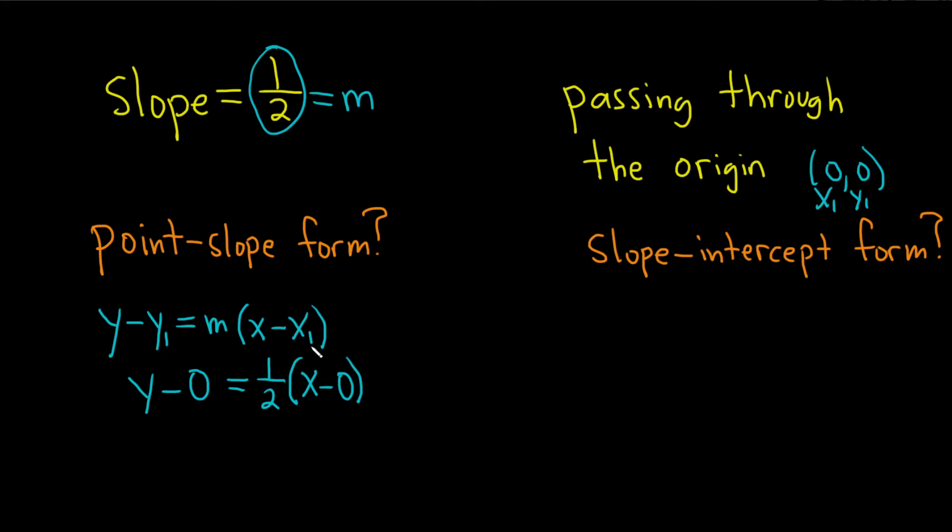So technically that is the point-slope form. We're done. If you like, you can simplify it just a little bit. So y equals one-half x. This would also be an acceptable answer for the point-slope form.